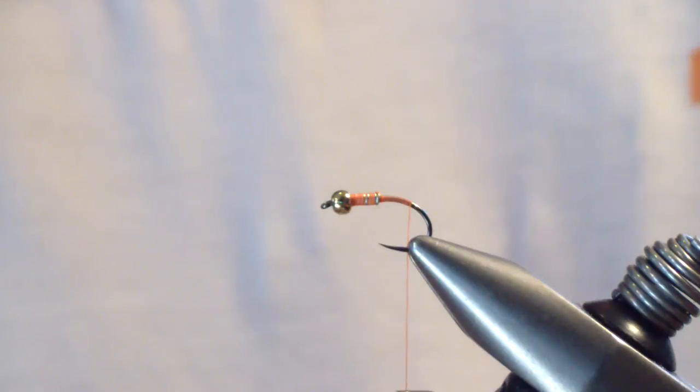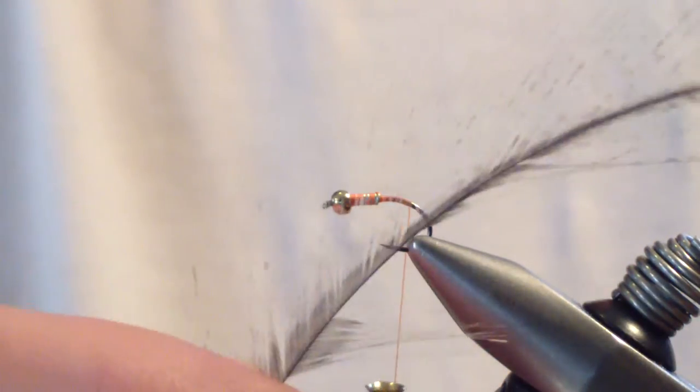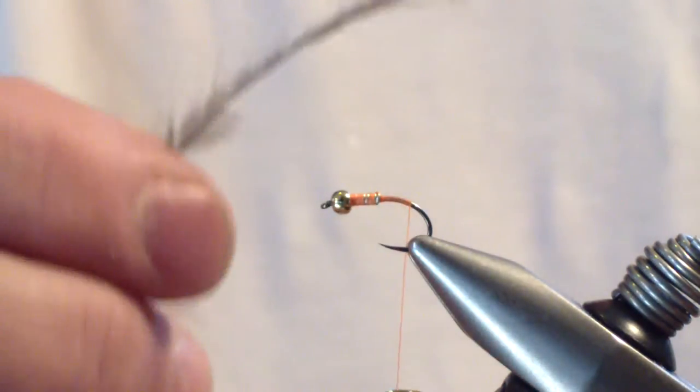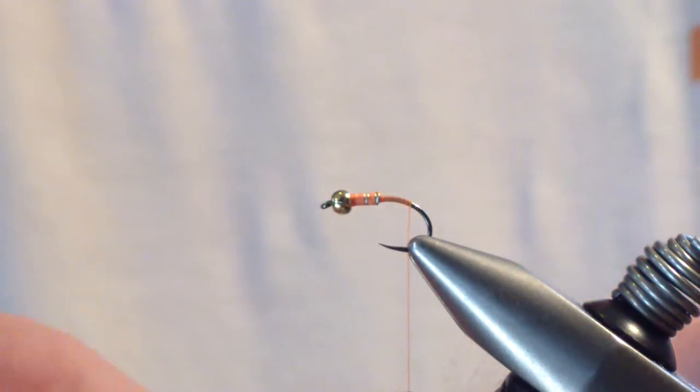The next material you're going to tie in is Coque de Leon. I have medium Pardo. And I'm going to take a sizable chunk of this, much more than I would for a normal dry fly pattern.